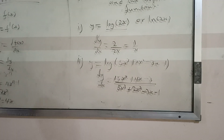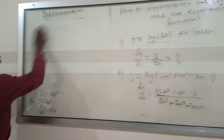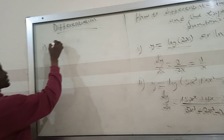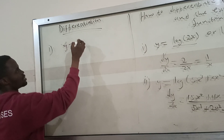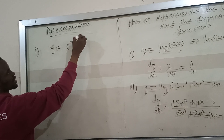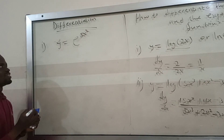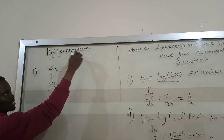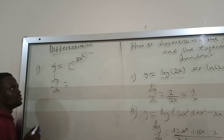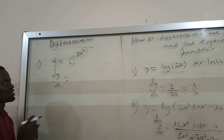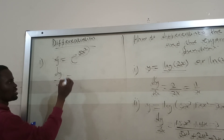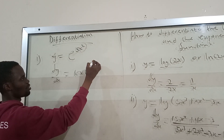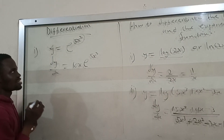Let's go to the exponential one. You can get y equal to e raised to the power 5x squared. The differentiation is simple. You differentiate the one at the top — you get 10x. Then the answer you get is multiplied by the whole function, giving you 10x times e raised to the power 5x squared. That's your answer.